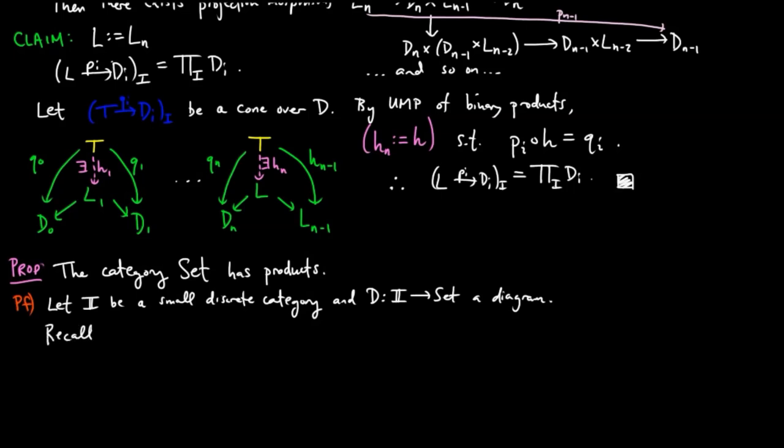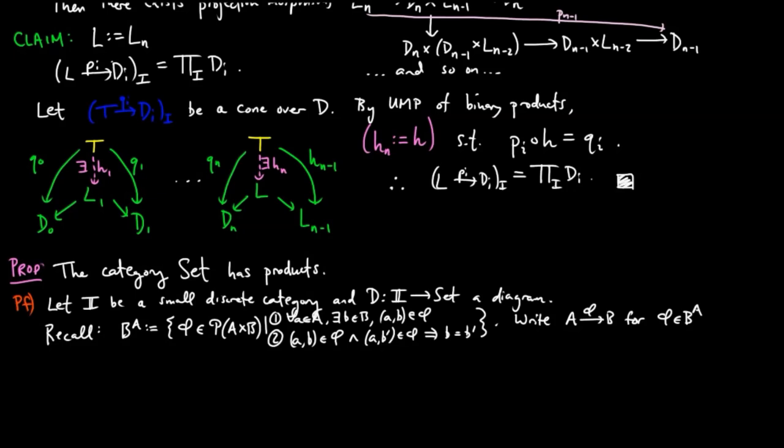Recall that from the axioms of Zermelo-Fraenkel we can define a set of maps from a set A to a set B as those subsets phi of the cartesian product A cross B such that one, phi is totally defined, and two, phi is uniquely defined.